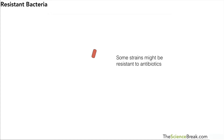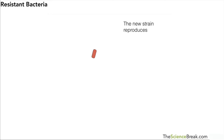If it's resistant to the antibiotics, this resistant strain can start to divide and produce many more copies of itself — or at least many more resistant bacteria.